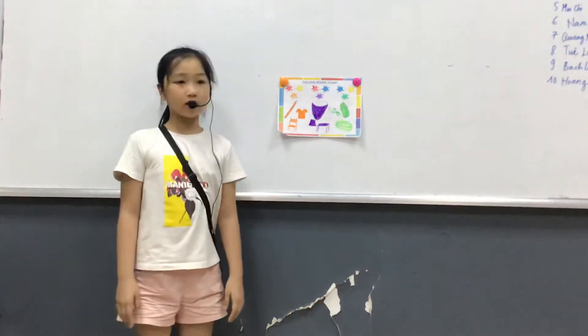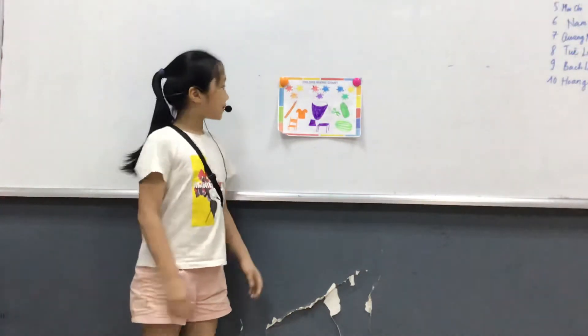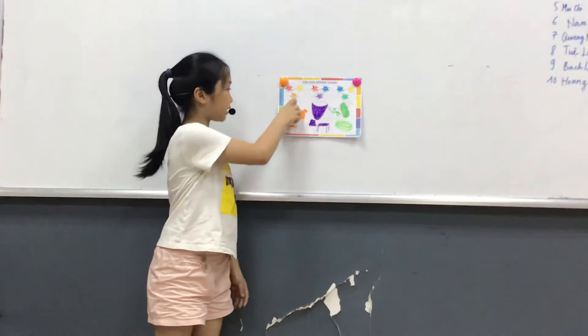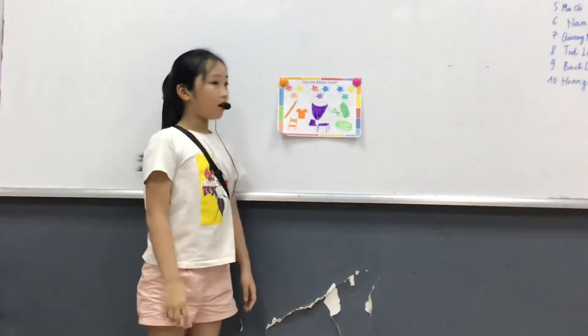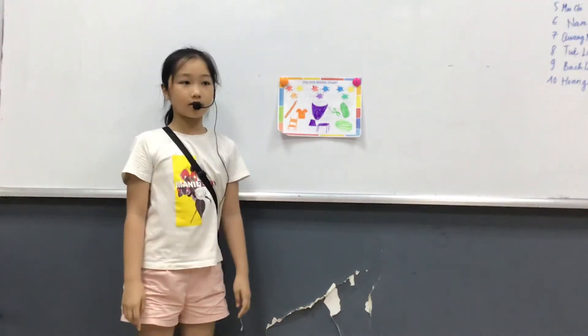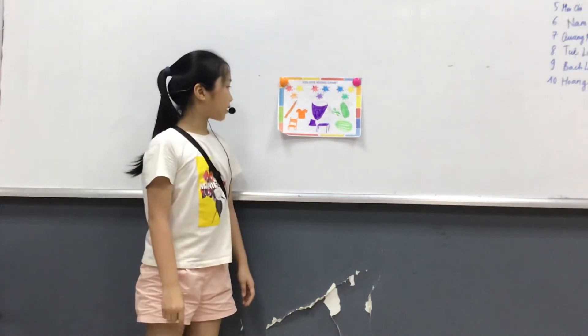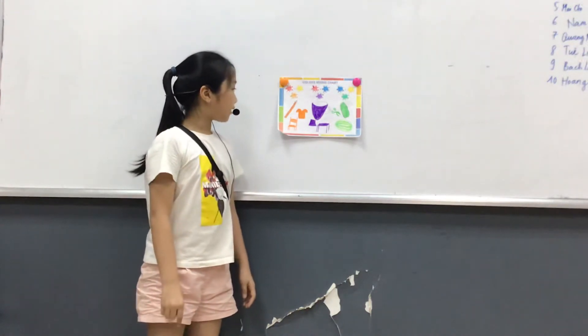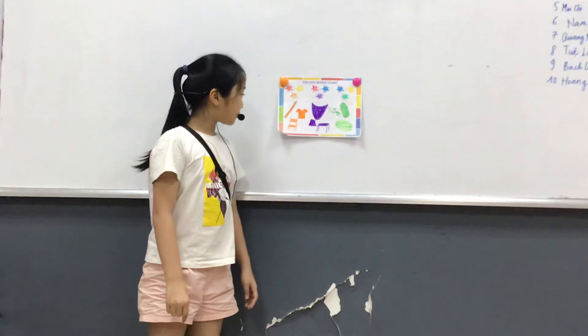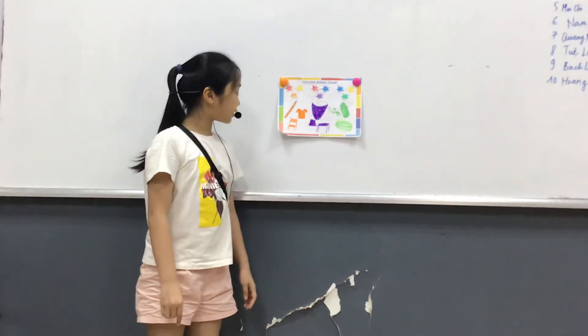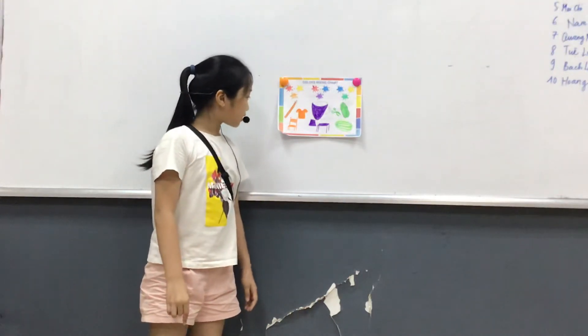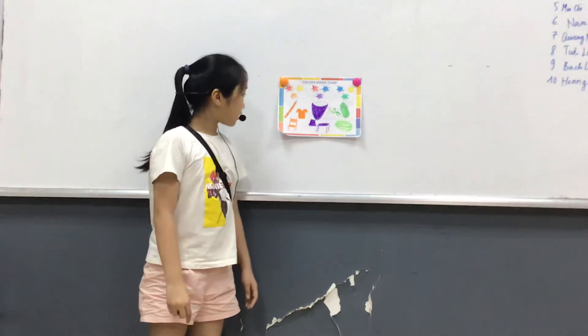My first color is orange. I mix red and yellow to get orange. Orange is a secondary color. Orange is a warm color. I have an orange pencil, an orange t-shirt, and orange hair.